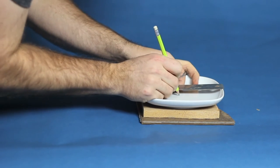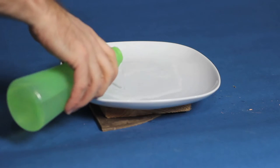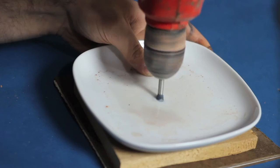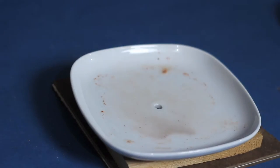Start by marking the center of both plates and add some water to cool the drill bit as you drill. Line the drill bit up and drill a hole through both plates.